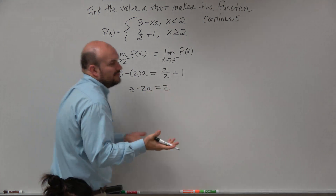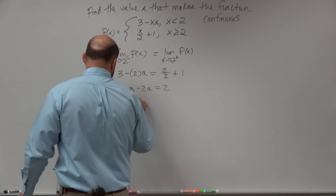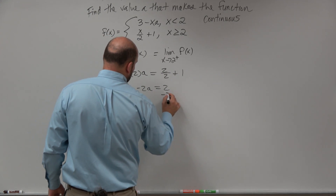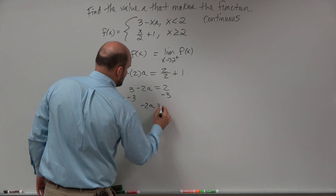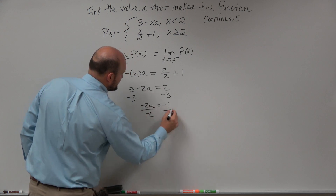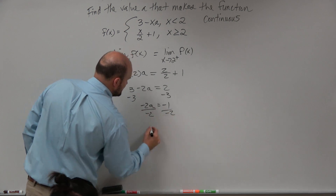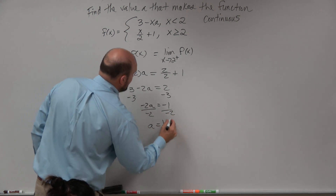Now we just have a little two-step equation. Subtract the 3: negative 2a equals negative 1. Divide by negative 2: a equals one-half.